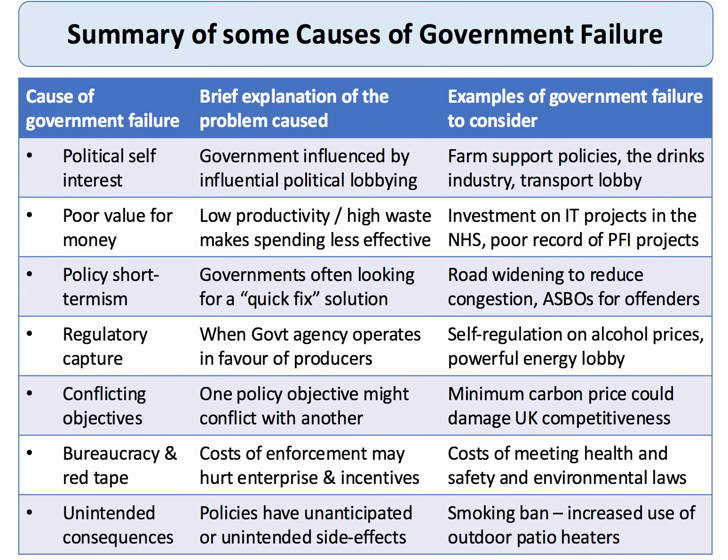Here are some examples of government failure. Self-interest caused by lobbying: think farm support policies or the drinks industry. Poor value for money: many government projects turn out to be wasteful and expensive. Policy short-termism: ASBOs becoming a badge of honour; road widening creating more traffic rather than reducing congestion. Regulatory capture: government agencies operating in favour of producers rather than consumers — the alcohol lobby being quite powerful. Conflicting objectives: a carbon price could damage UK business competitiveness. Red tape from health and safety laws is another example.